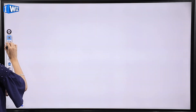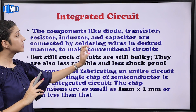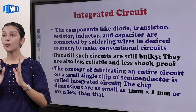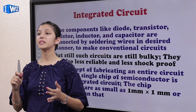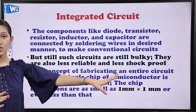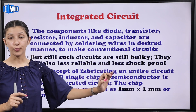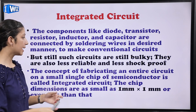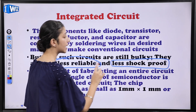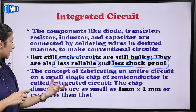The last topic is integrated circuit. Components like diode, transistor, resistor, inductor, and capacitor are connected by soldering wires in a desired manner to make conventional circuits. But these conventional circuits are very bulky, less reliable, and less shock-proof — shock lagne ka khatraa bhi zyada tha. So the concept of fabricating an entire circuit on a small single chip of semiconductor is called an integrated circuit.